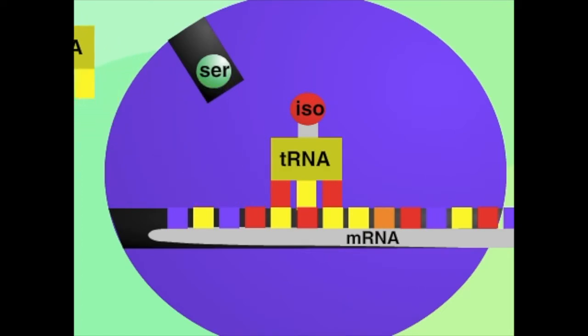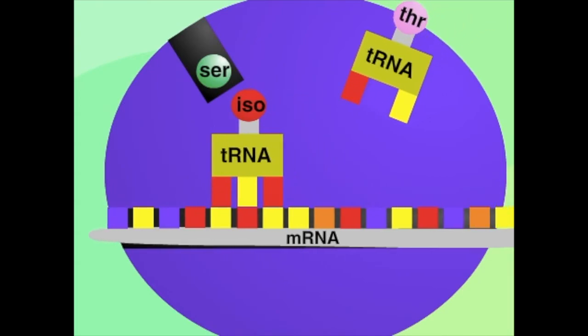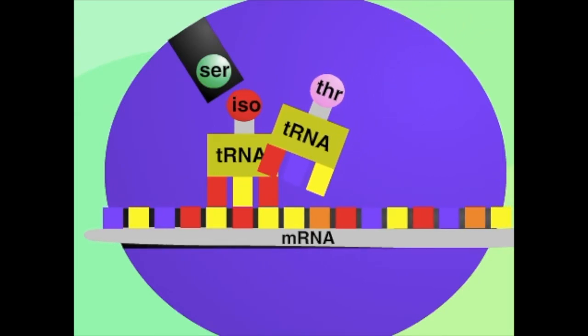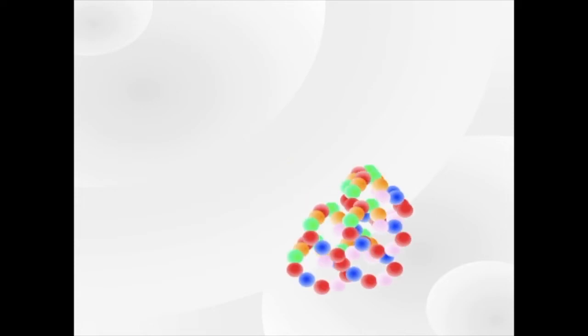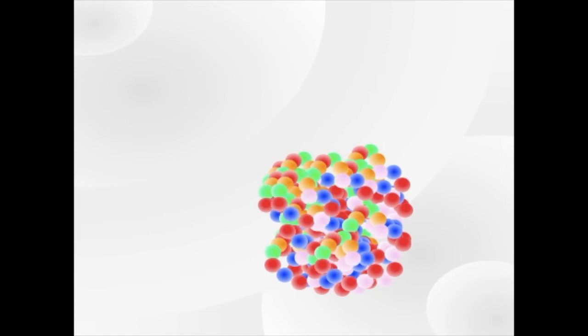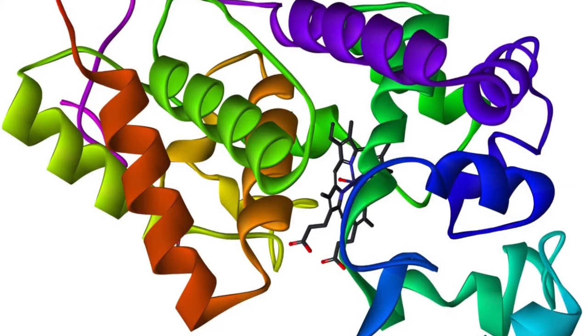And as more and more tRNA find their matching codons, a chain of amino acids would form, and so on. Once this is done, the pattern that forms a chain of amino acids would fold on itself and form a protein.